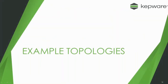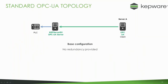Now we're going to look at various topologies that can be employed that have an element of VMs, redundancy, or clusters in them. Here's your basic OPC UA topology. You have your PLC on the left hand side that has the data, you have your Kep server OPC UA server, and on the right you have an OPC UA client connecting to the OPC UA server. The OPC UA server is polling data from the PLCs and providing it back to the client.